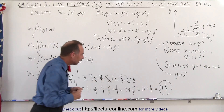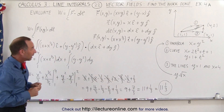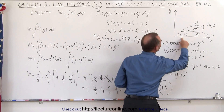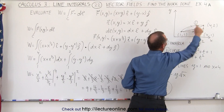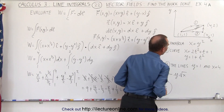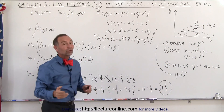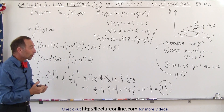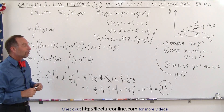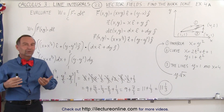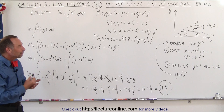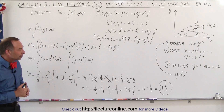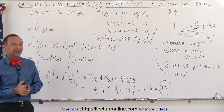That is the work done as defined by this vector field, moving from (1,1) to (4,2) along path number one — the parabola — which equals 11 and one-third. In the next two videos we'll repeat this problem along path number two and path number three. These are good examples of how to find work done using line integrals and vector fields.